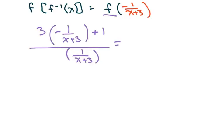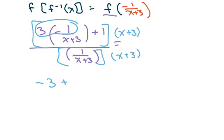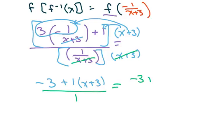Now we're going to clear the fractions. So I'm going to multiply by x plus 3 times x plus 3. This is negative 3 plus 1 times x plus 3. You distribute there and this cancels, and the denominator just cancels. So we're over 1. So you get negative 3 plus x plus 3 over 1. These cancel and we're left with x.